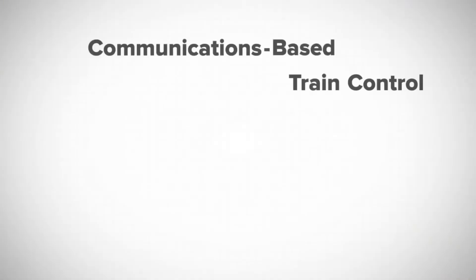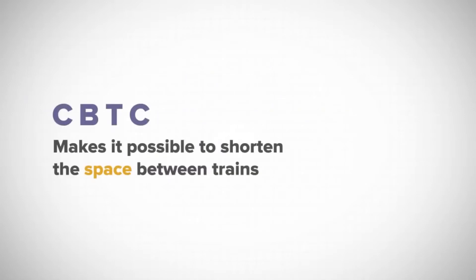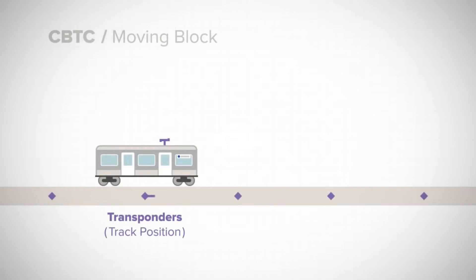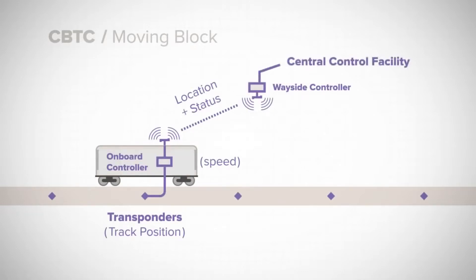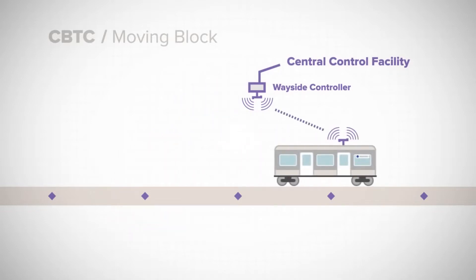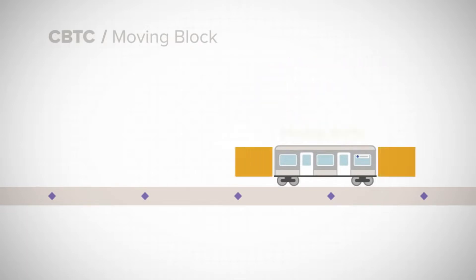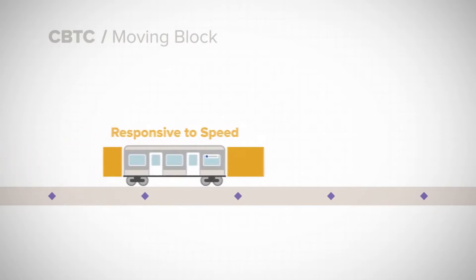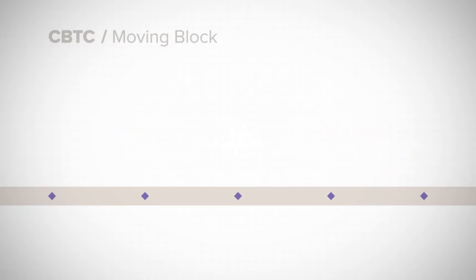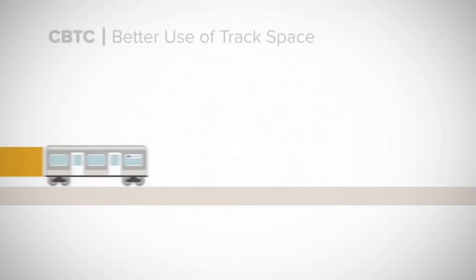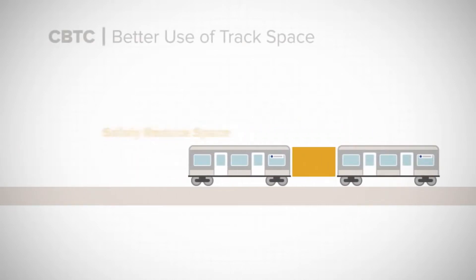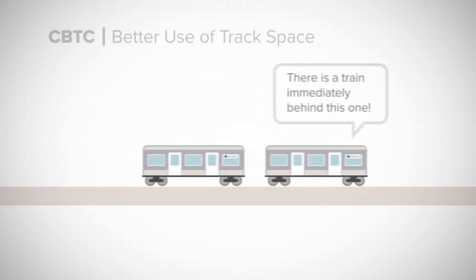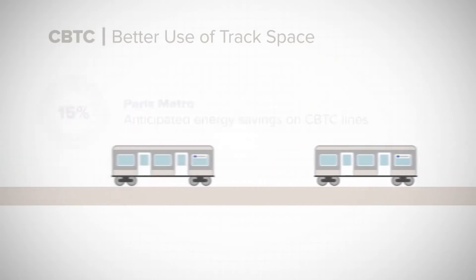Communications-based train control, or CBTC, makes it possible to shorten the space between trains without increasing risk. A train's location is determined using devices along the tracks and on board. This information is transmitted wirelessly to a centralized control facility, which coordinates all train movements throughout the system. Unlike today, the buffer that ensures safe spacing between trains is no longer fixed. Instead, CBTC establishes safe separation by creating a moving buffer, responsive to a train's speed and surroundings. CBTC uses existing track space more efficiently, safely reducing the space between trains and making room for additional service. The system can adjust train speeds to prevent bunching and recover from delays, resulting in a smoother ride and conserving energy.